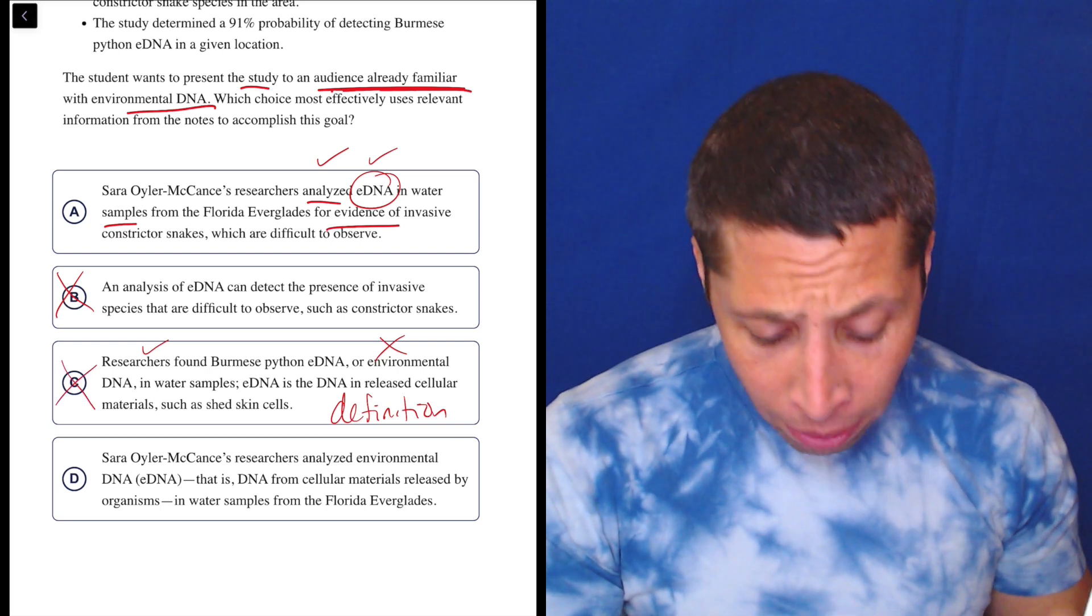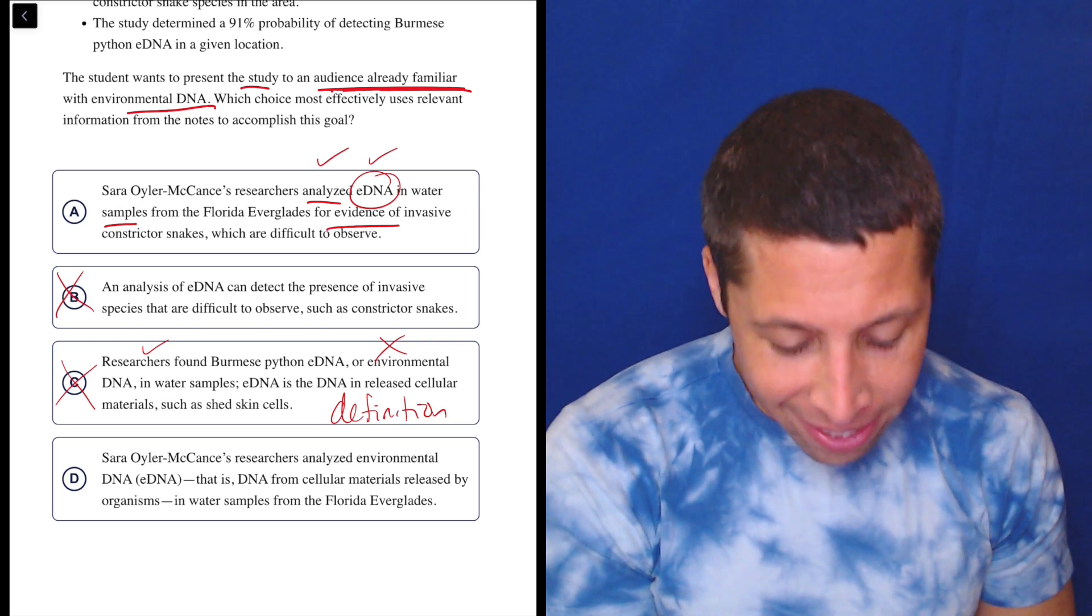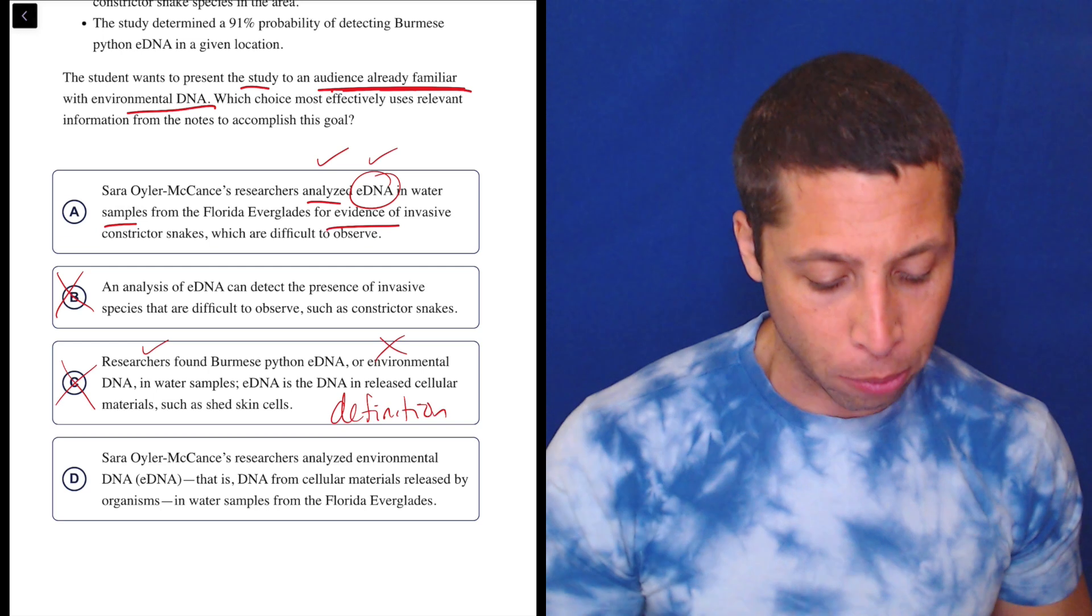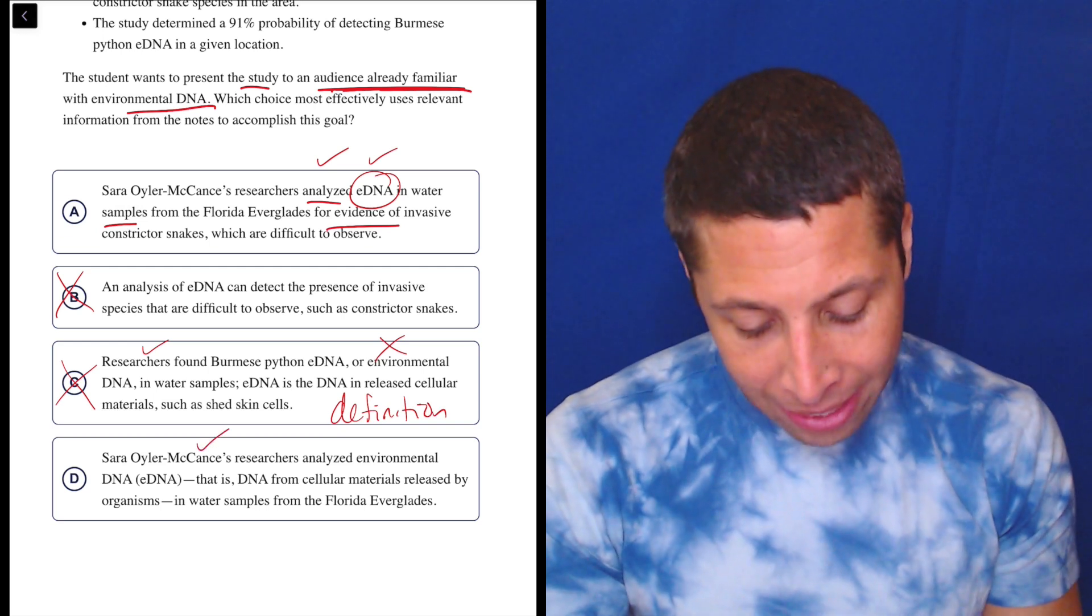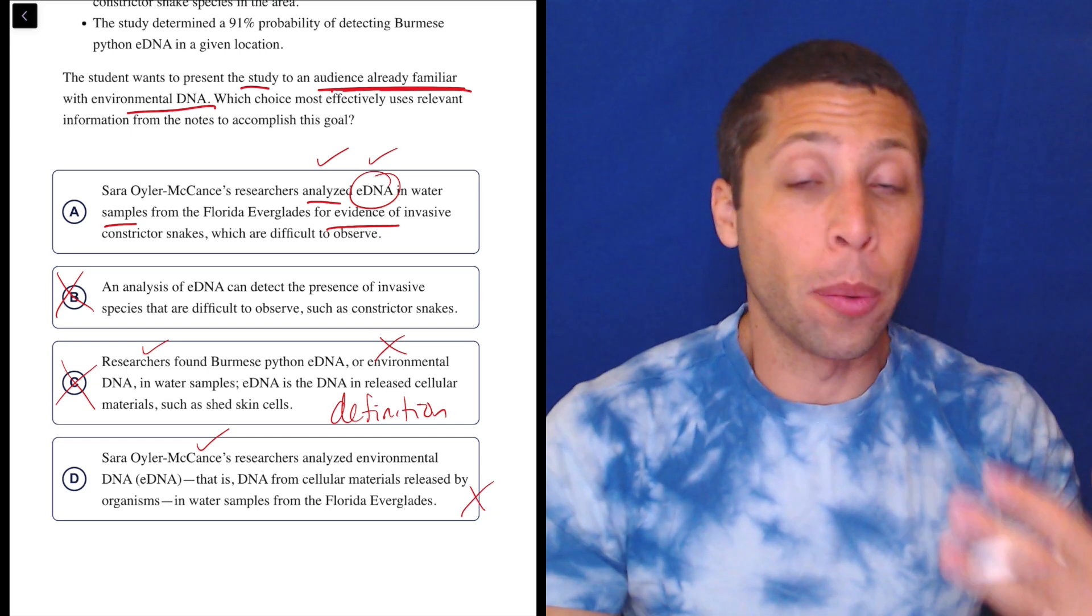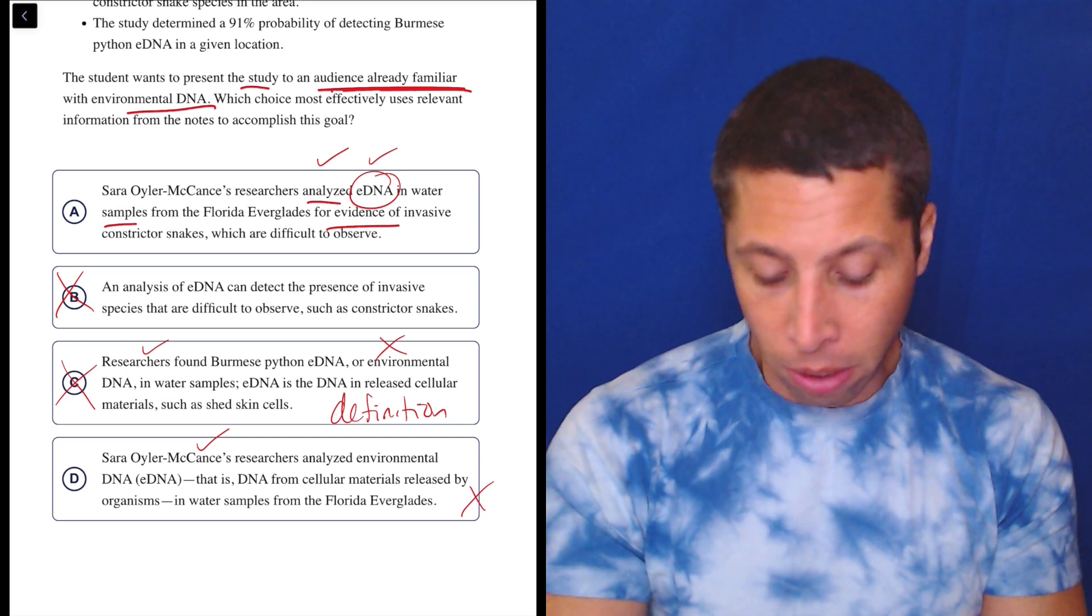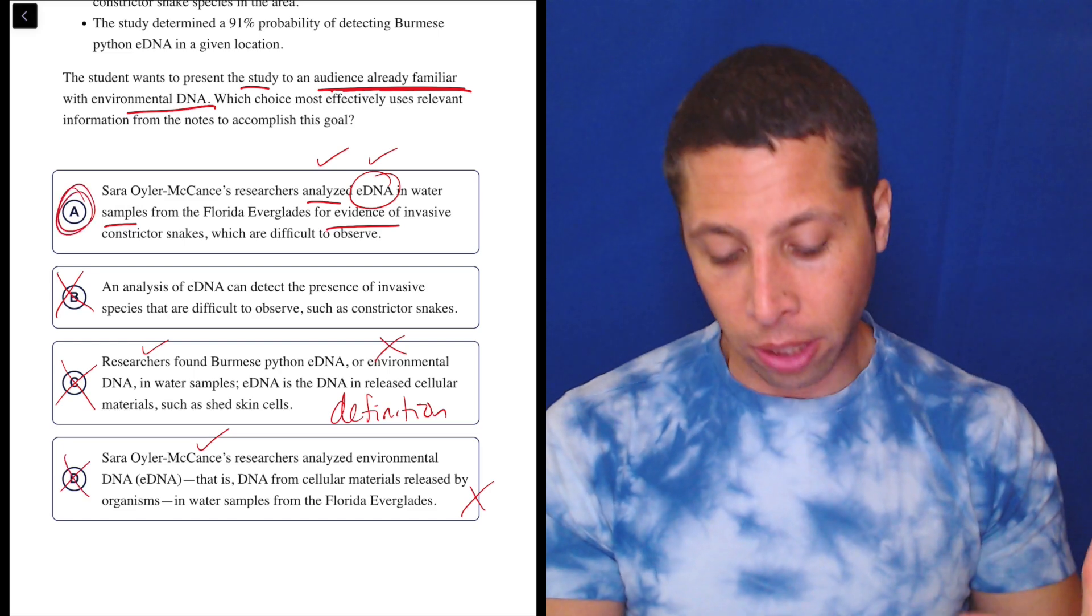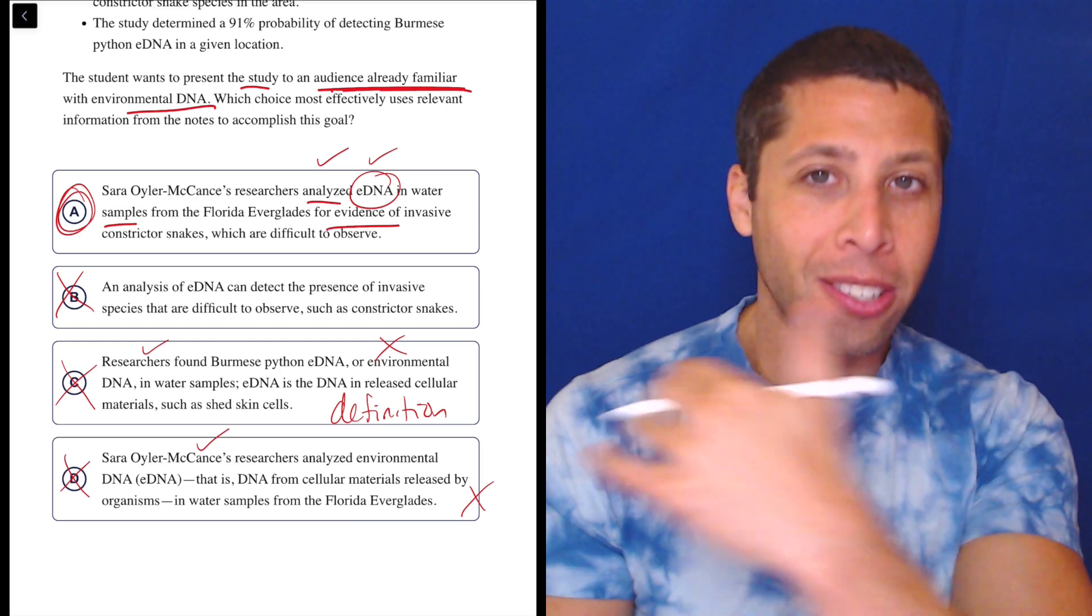Choice D: Sarah Euler-McCance's researchers analyzed environmental DNA (eDNA) - that is, DNA from cellular materials released by organisms - in water samples from the Florida Everglades. So this also, probably better than C, talks about the study, but it's also saying that if we were unfamiliar with what this is, now we're getting the definition. But we are supposed to be familiar.